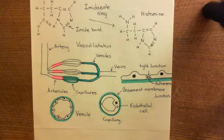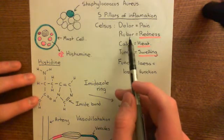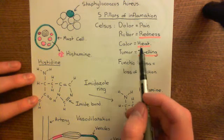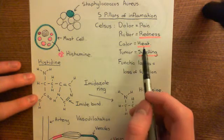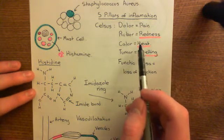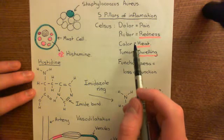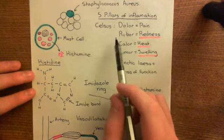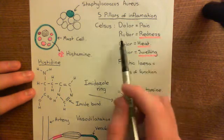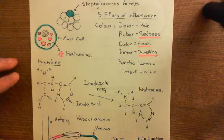This is what leads to the rubor and the calor of the five pillars of inflammation. Rubor means redness, and calor means heat. In the area undergoing the inflammatory response, you get redness and heat because all of the arterioles leading to this affected area dilate and allow increased blood flow. You get more blood in that area, which makes it appear redder than normal, and it also becomes hot because blood is a very warm fluid — calor.